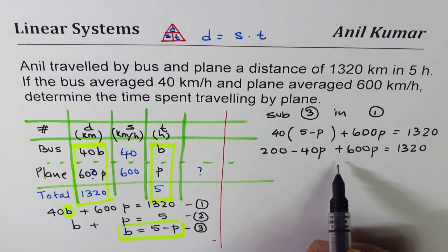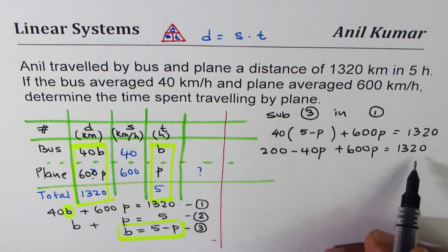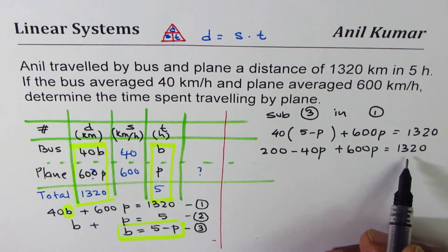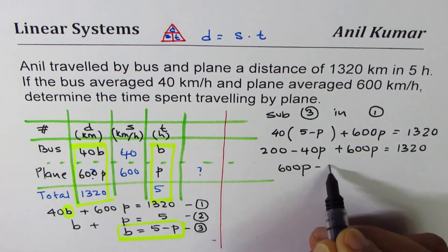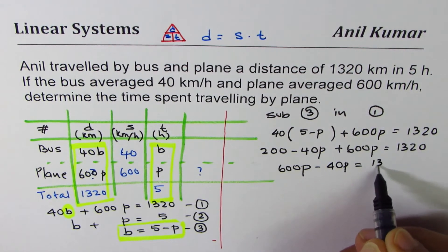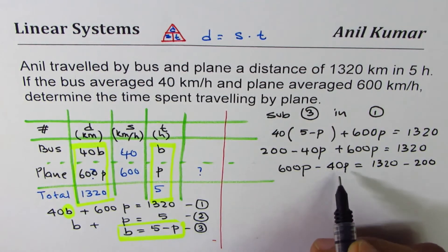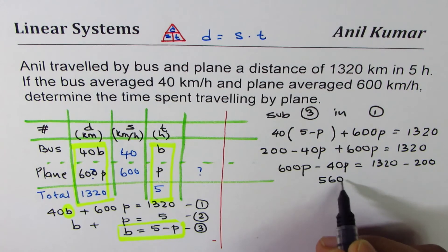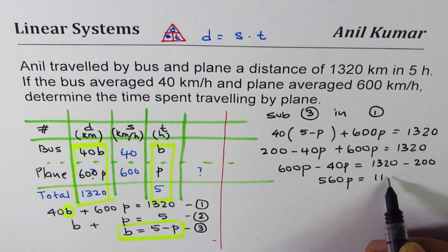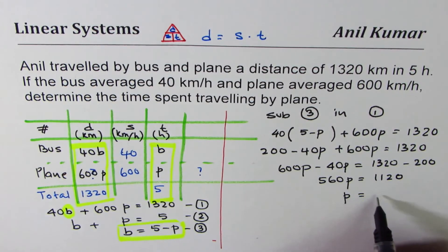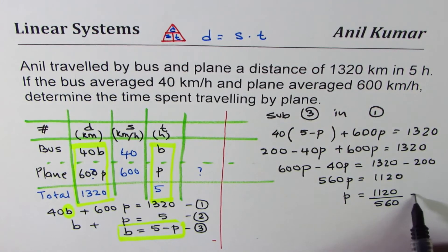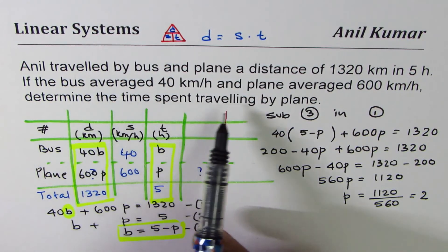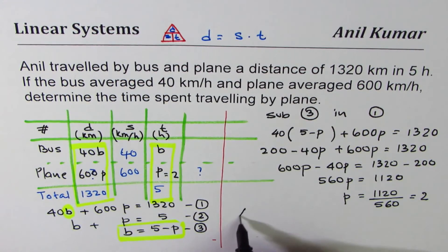Bring variables to one side and constants to the other side. We take 200 to the right side: 600P minus 40P equals 1320 minus 200. That gives 560P equals 1120, so P equals 1120 divided by 560, which gives P equals 2. The question was to determine the time spent traveling by plane, so our answer is P equals 2.